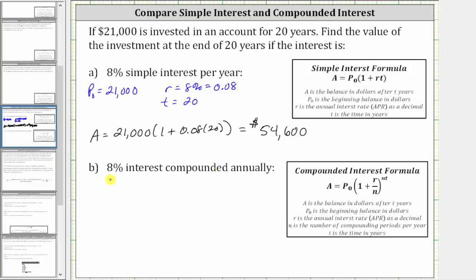Now let's determine the balance using 8% interest compounded annually. To determine the ending balance, we will use the compounded interest formula, where A is the amount after T years, P sub zero is the beginning balance or initial investment, R is the annual interest rate expressed as a decimal, N is the number of compounds per year, and T is the time in years.